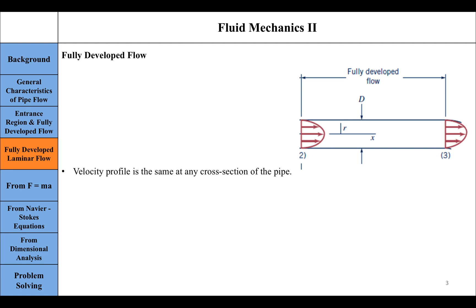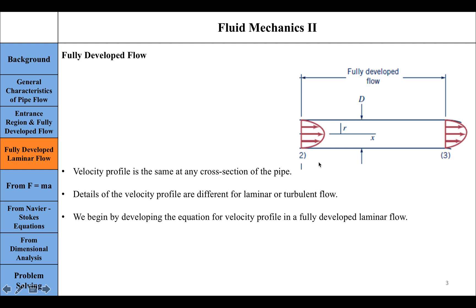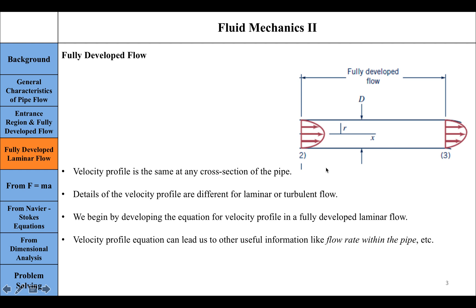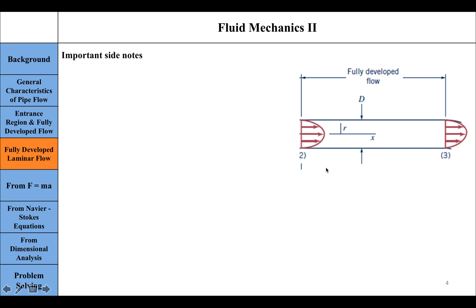The details of the velocity profile — whether it's going to be parabolic or some other shape — depend majorly on whether the flow is laminar or turbulent. We begin by developing the equation for the velocity profile in fully developed laminar flow, because knowledge of this velocity profile can lead us directly to other useful information such as the flow rate within the pipe or the pressure drop within the pipe.